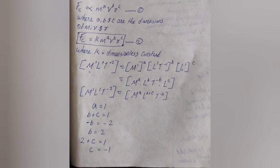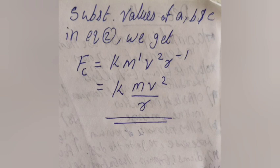By comparing powers, we get a = 1, b = 2, c = -1. Substituting these values into equation 1: F_c = k · m¹ · v² · r⁻¹. Finally, F_c = kmv²/r.